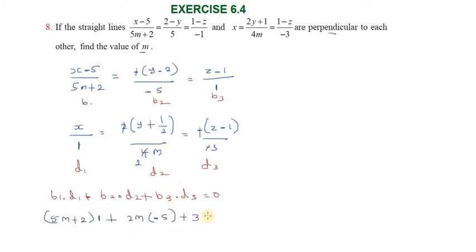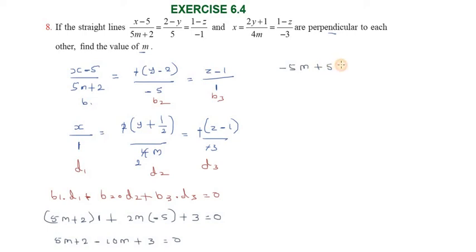Setting the expression equal to zero: 5m plus 2 plus 2m into minus 5 minus 10m plus 3 equals 0. Simplifying: 5m minus 10m minus 5m plus 3 plus 2 equals 0, which gives minus 5m plus 5 equals 0, therefore m equals 1.